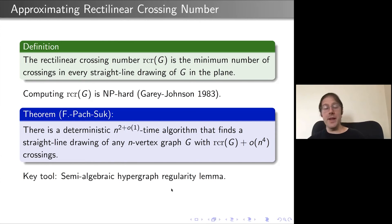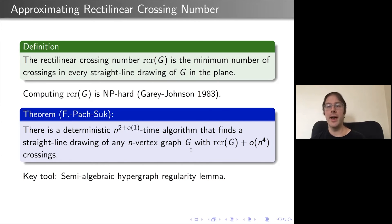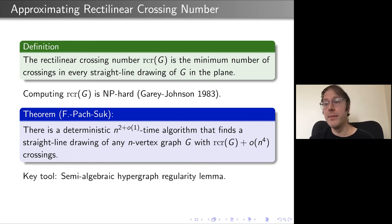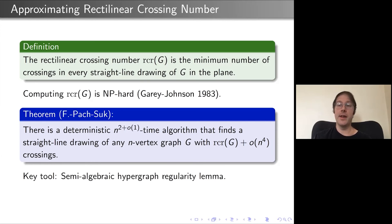One can also get a randomized algorithm which is essentially constant time for this approximation. Using these tools, one can show that what really determines the rectilinear crossing number is the cut norm — if two graphs are close in cut distance, their rectilinear crossing numbers are close.